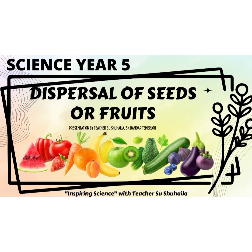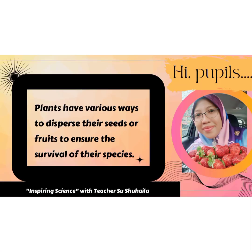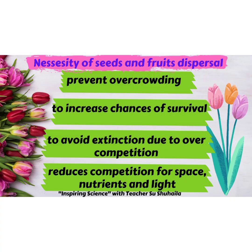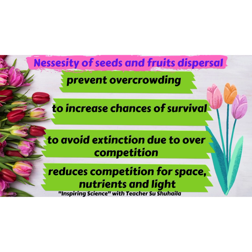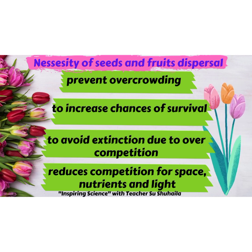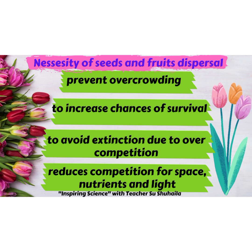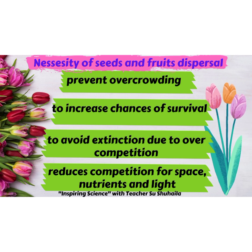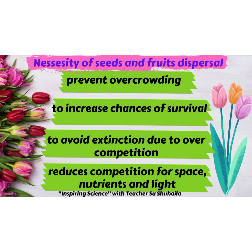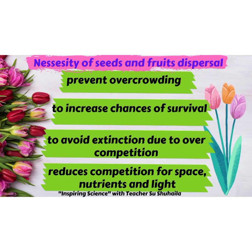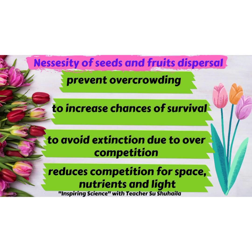Dispersal of Seeds or Fruits — Science Year 5. Plants have various ways to disperse their seeds or fruits to ensure the survival of their species. Plants need to disperse their seeds or fruits far from the parent plants. Here are some reasons for that: to prevent overcrowding, to increase chances of survival, to avoid extinction due to overcompetition, and to reduce competition for space, nutrients and light.